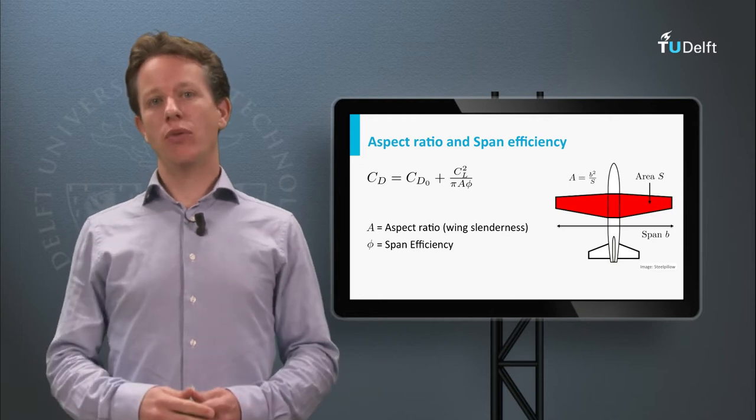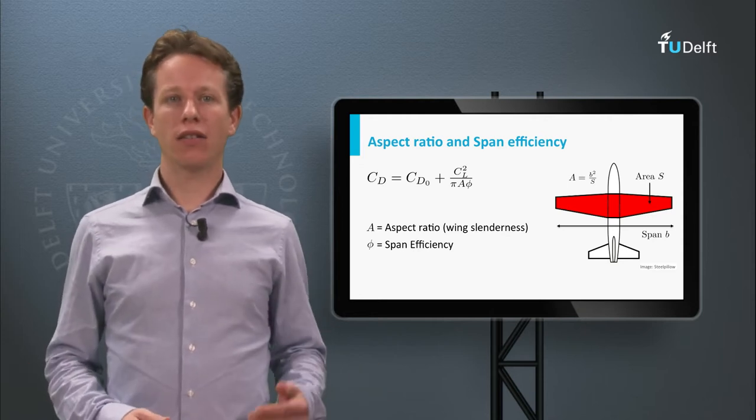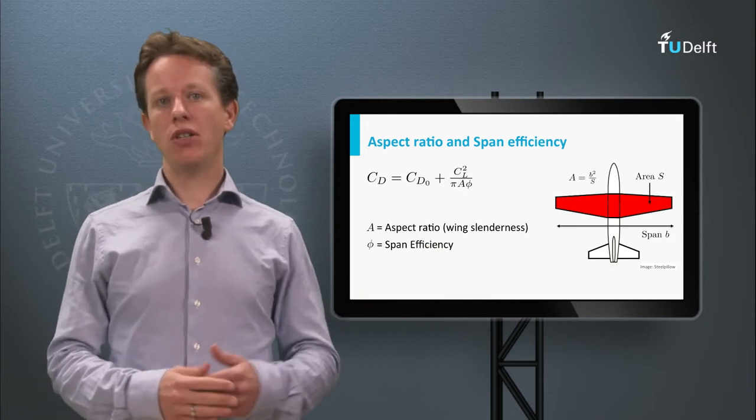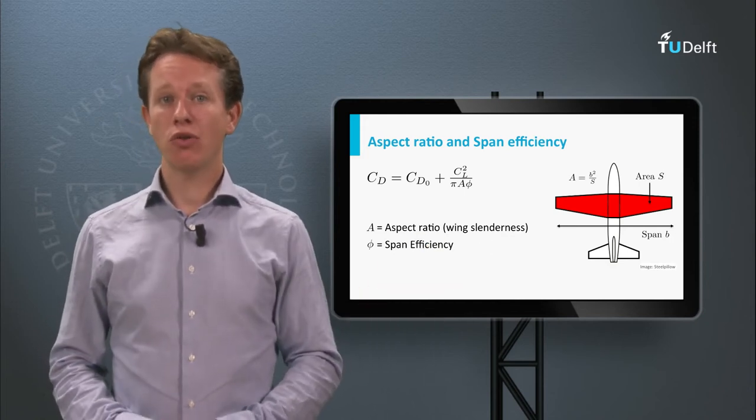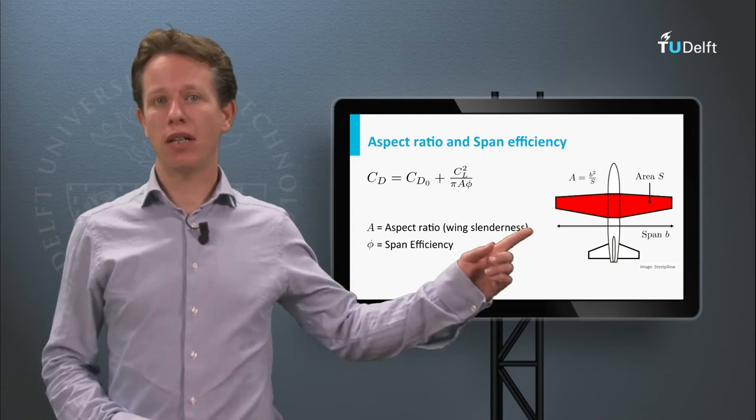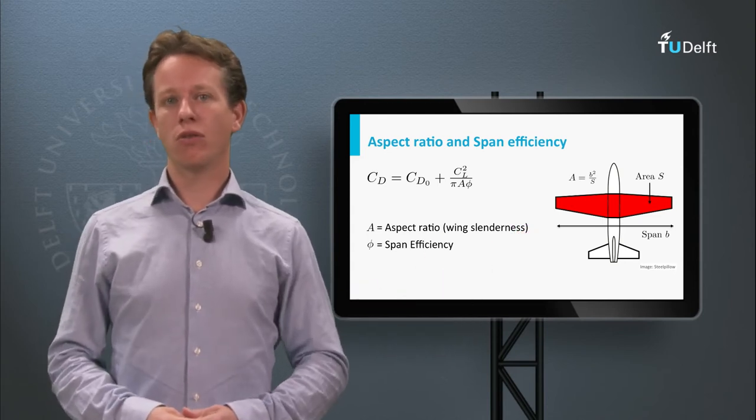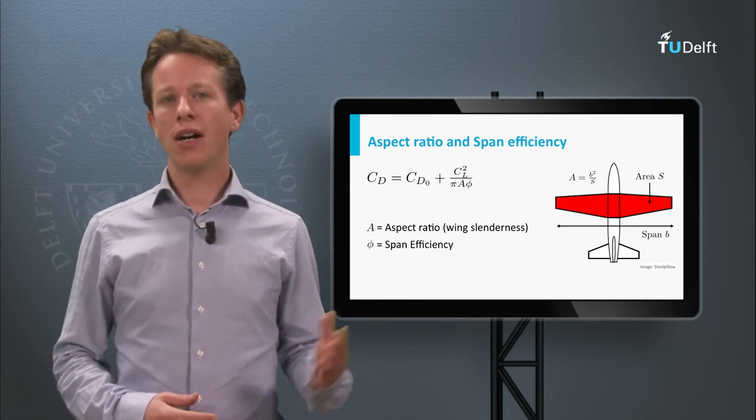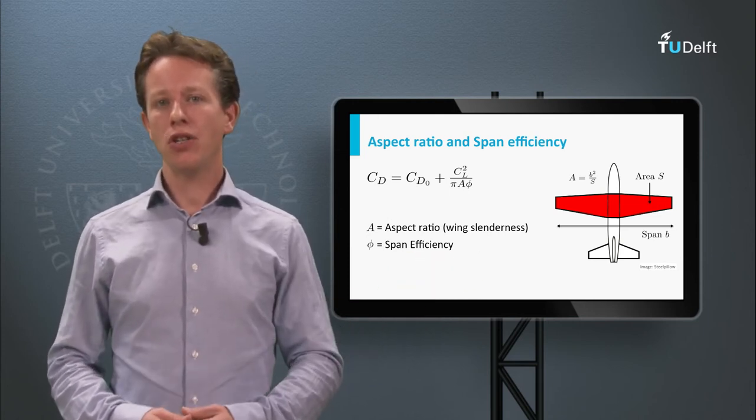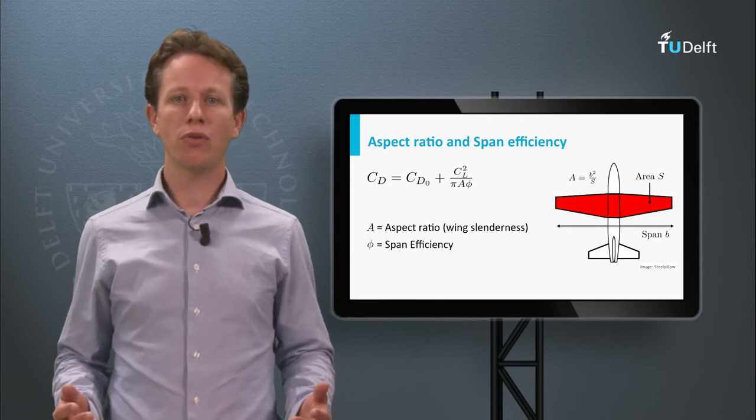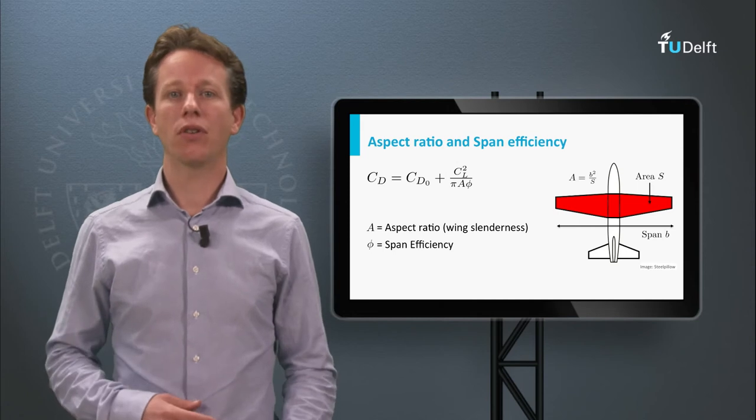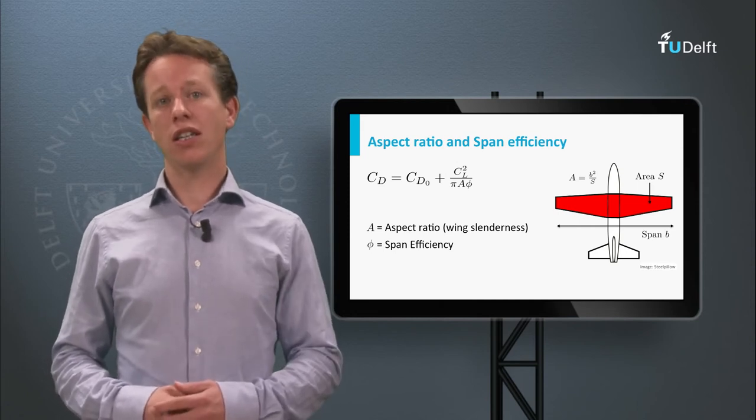Let's have a look at the equation that relates lift to drag, the lift-drag-polar. The parameter A in this equation, aspect ratio, describes how slender the wing is, as indicated by the figure. The larger it is, the more the wing approaches a two-dimensional wing. The parameter phi in the equation is the span efficiency, a measure for the lift distribution over the wing. In the ideal case, when the designers have done an excellent job, it actually equals one.